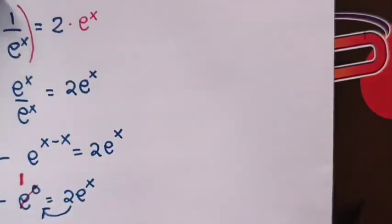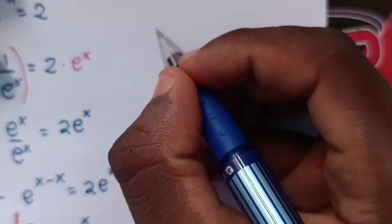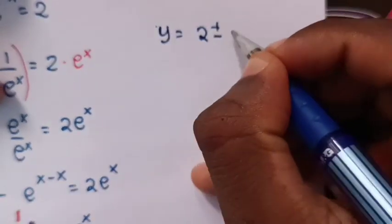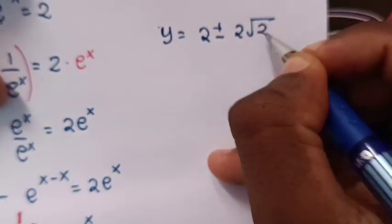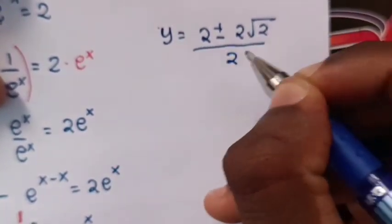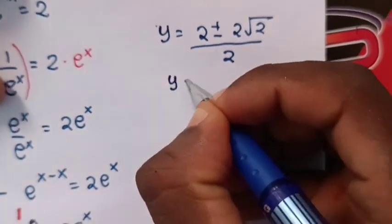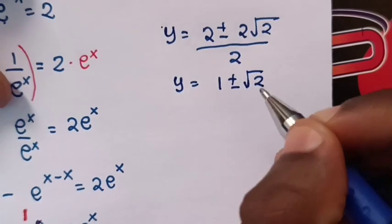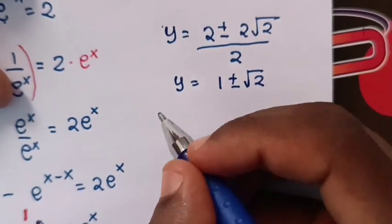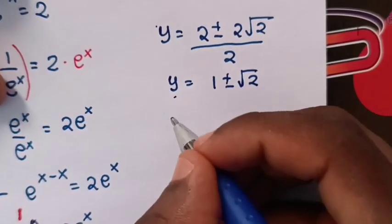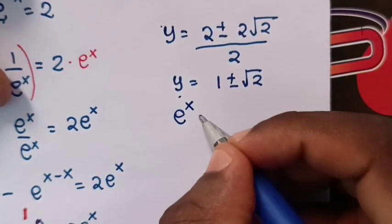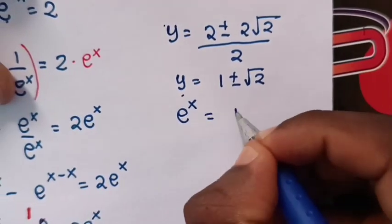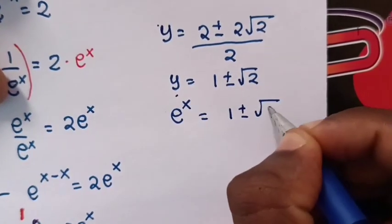So y equals 2 plus or minus 2 square root of 2, all over 2. Dividing by 2, y equals 1 plus or minus square root of 2. Since we let y equal e power x, we have e power x equals 1 plus or minus square root of 2.